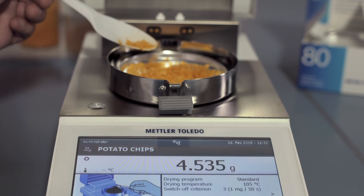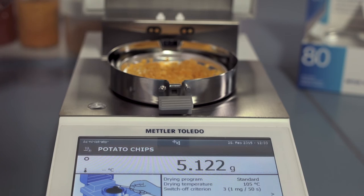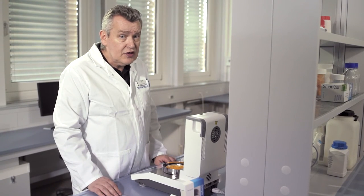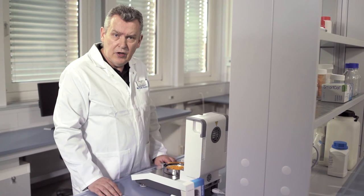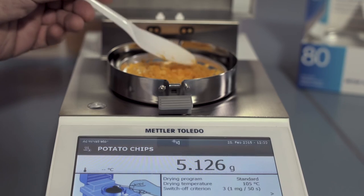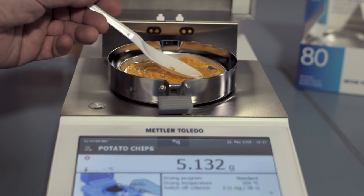Typically, use 3 to 5 grams of sample, but the quantity really depends on the type of sample to be measured. You have to make sure the sample is evenly spread around the aluminium sample pan.